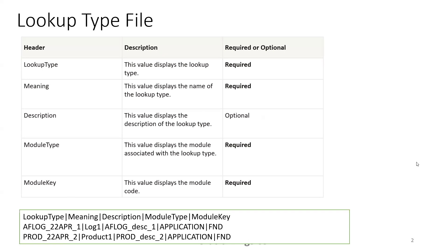As per Oracle documentation, there are a couple of columns to provide when loading the lookup type. For the lookup type file, there are around four required columns: lookup type, lookup meaning, description (optional), and the module type as well as module key. Lookup type and lookup meaning are generally user-defined values, description is also user-defined, but you must mention the standard module type and module key.